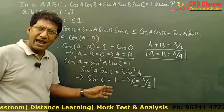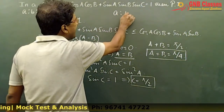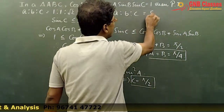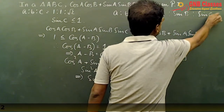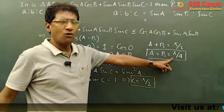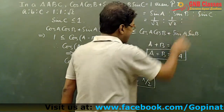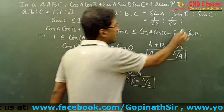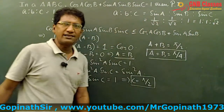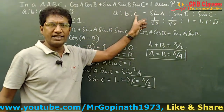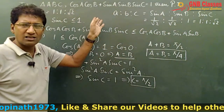From the sine rule, a:b:c = sinA:sinB:sinC. sinA = sin(π/4) = 1/√2, sinB = 1/√2, and sinC = sin90° = 1. So we get the ratio 1/√2 : 1/√2 : 1, which simplifies to 1:1:√2 — exactly what was asked to prove.